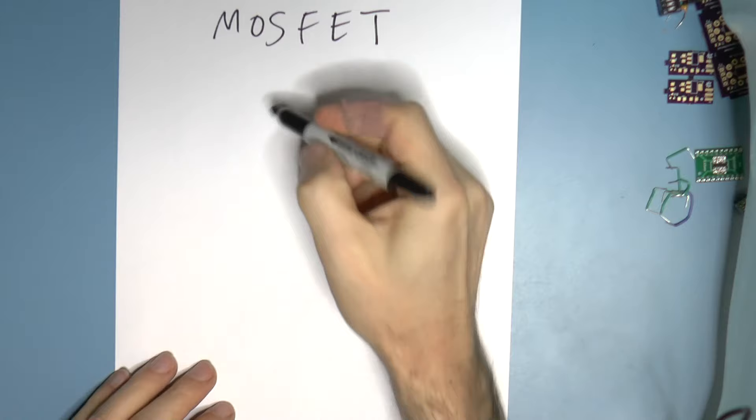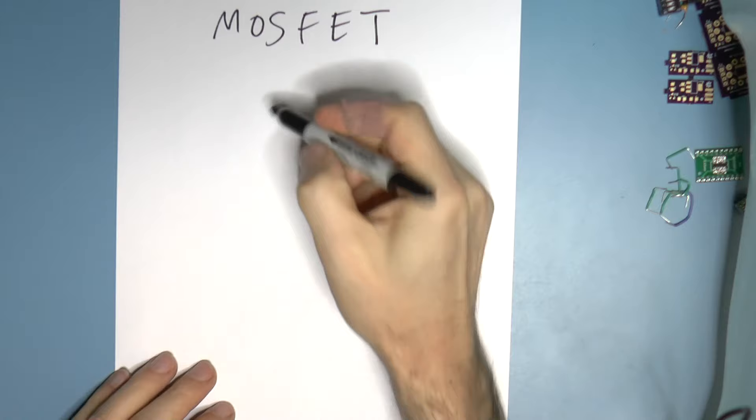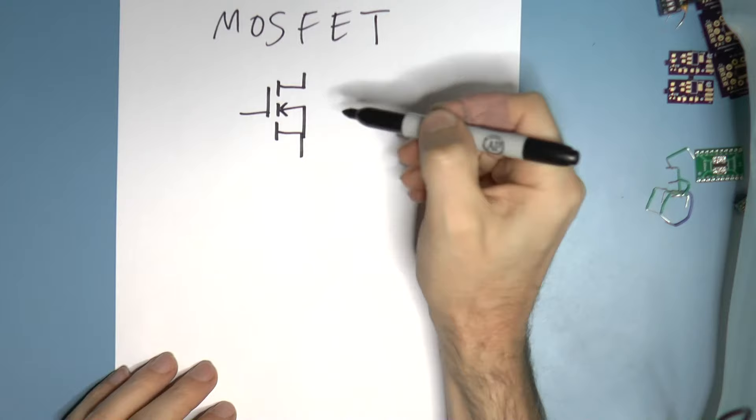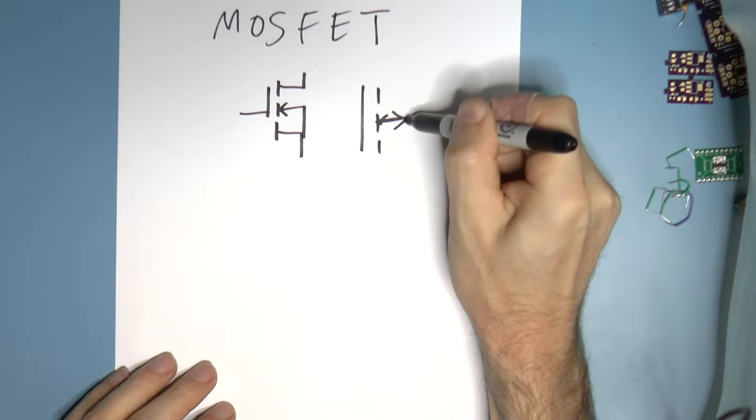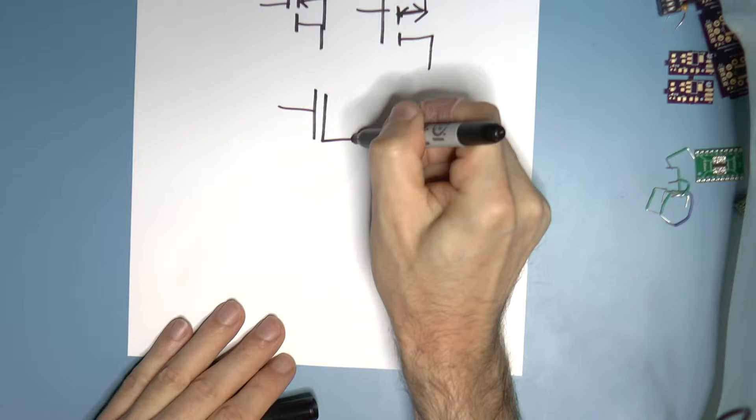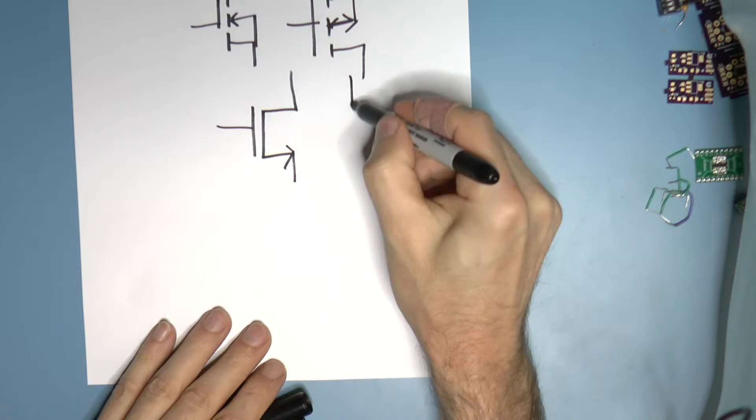You've probably seen a symbol that looks something like this, or maybe it goes the other way around — with an arrow going this way, or maybe with an arrow going that way, or possibly with an arrow going the other way.